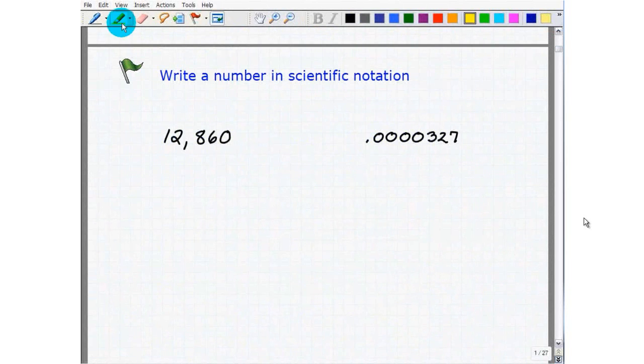One semi-large, not too difficult, 12,860, but we'll use that as our large number. And then here I have a small number. So let's learn how to write these numbers in the scientific notation.